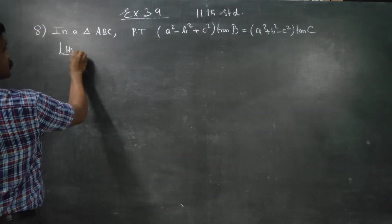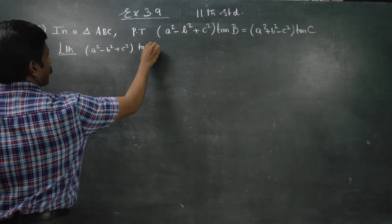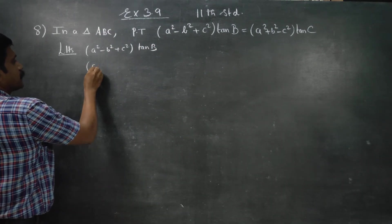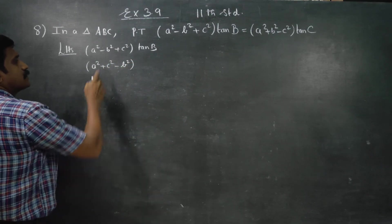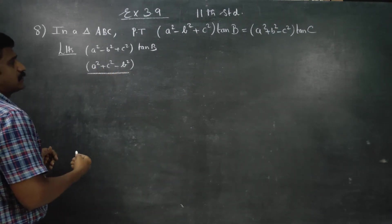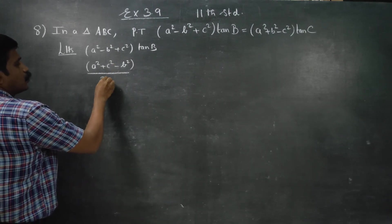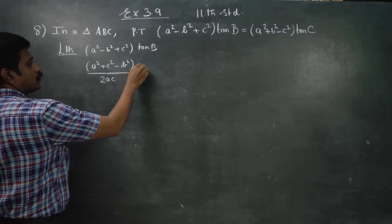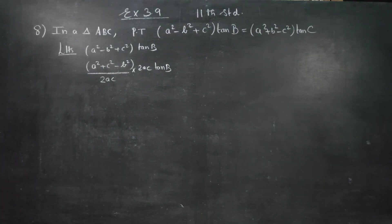My LHS is A² minus B² plus C² tan B. I am going to multiply and divide by 2AC, so A² minus B² plus C² tan B, multiply and divide by 2AC.